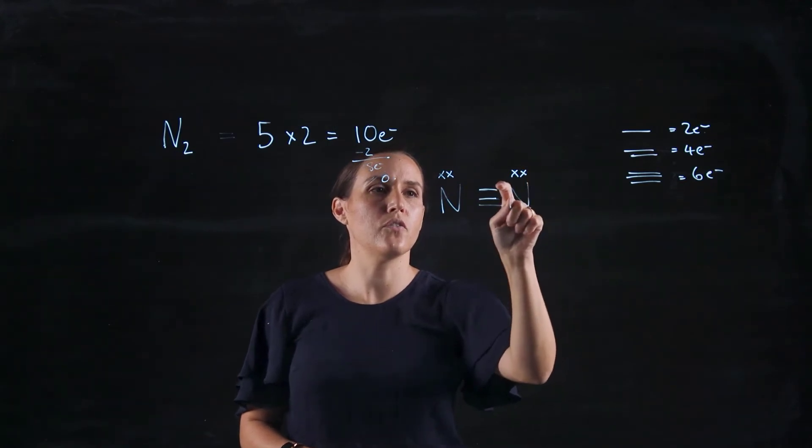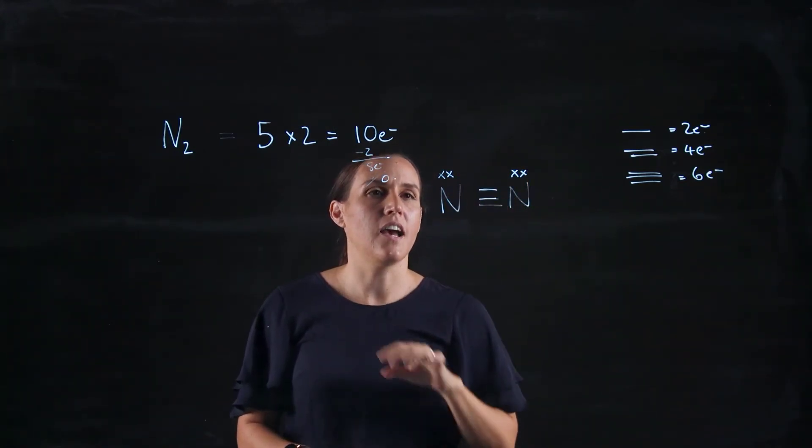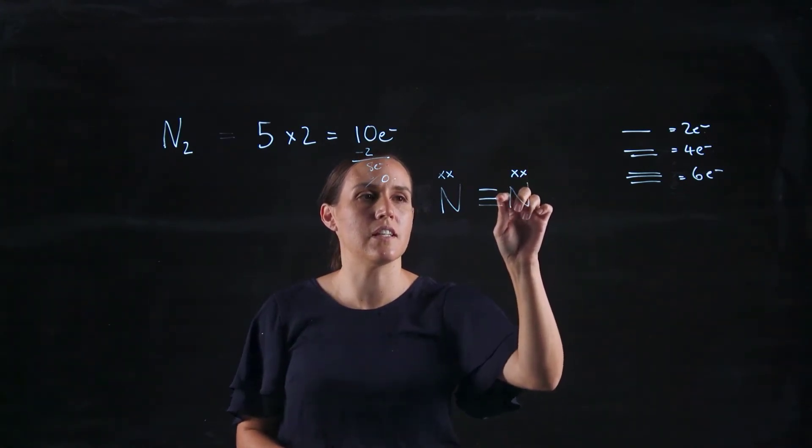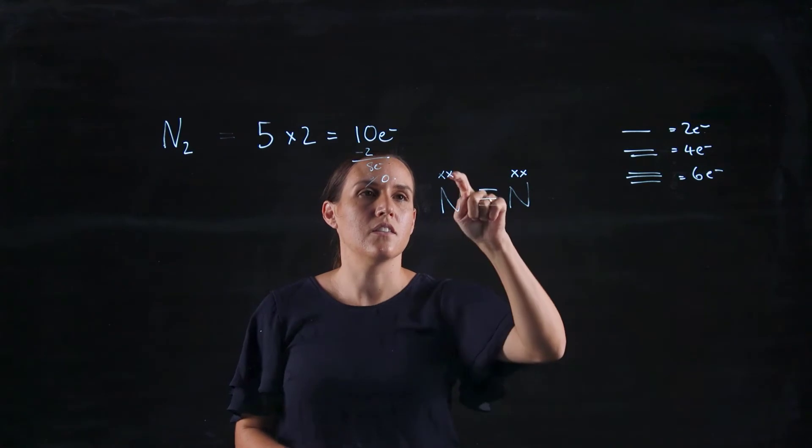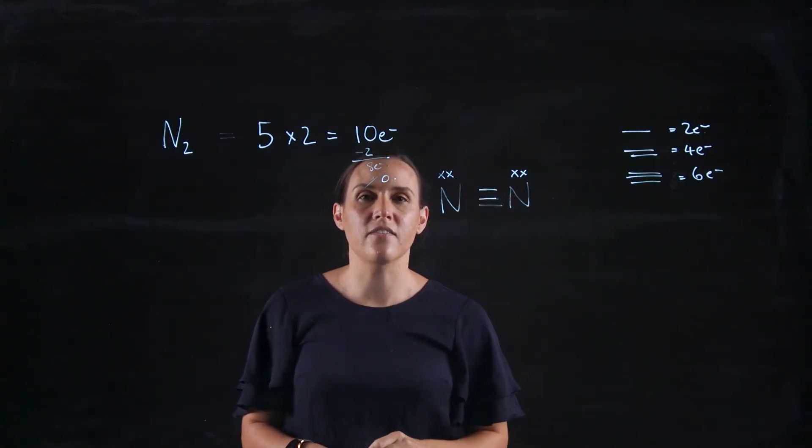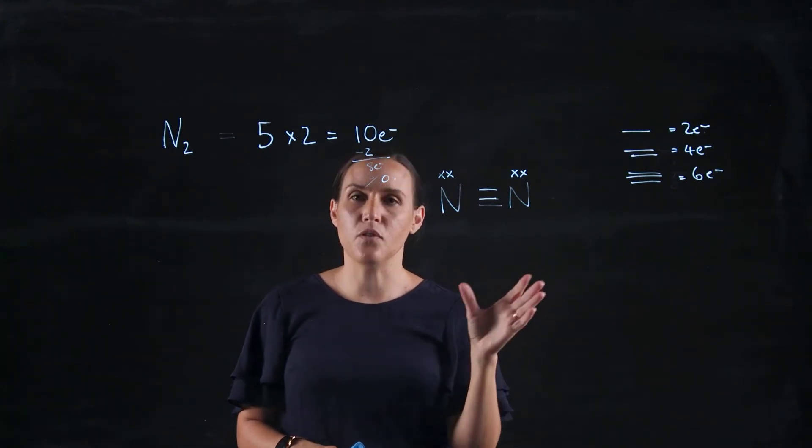So now I've got two, four, six, eight, ten electrons. So I haven't added any. I've just rearranged them. So let's check each nitrogen. This one has two, four, six, eight. It's good. This one's got two, four, six, eight. So now they've both got eight. So they've got their valency of eight, which is what they need. So that is how we draw the Lewis diagram.